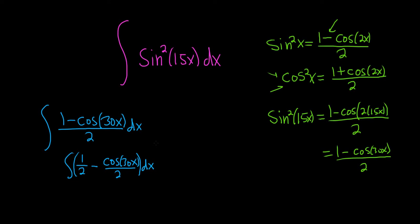Now we can break this up into two separate integrals. So the first one, I'll pull out the 1 half, so it'll be 1 half times the integral of 1 dx minus 1 half times the integral of cosine of 30x dx.